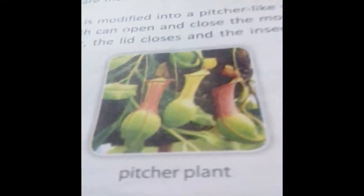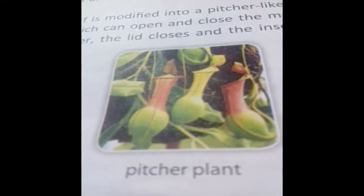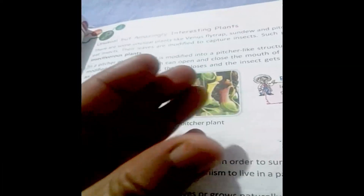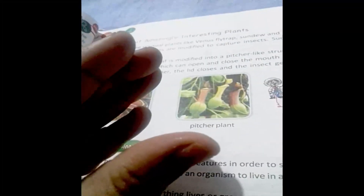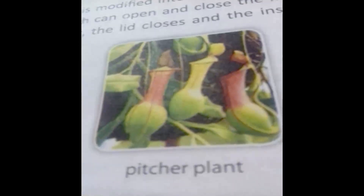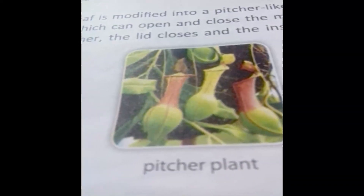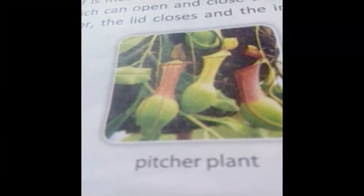You can see the pitcher-like structure on this plant. The leaf tip is modified to form a lid which can open and close. When an insect sits on it, it closes. First it is open, waiting for insects, and whenever an insect comes to the mouth, it closes. Once an insect enters the pitcher, the lid closes and the insect gets trapped inside.